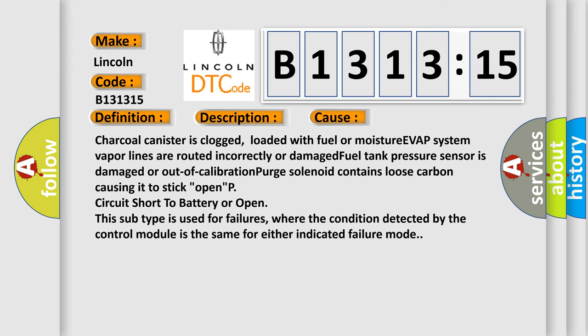This diagnostic error occurs most often in these cases: Charcoal canister is clogged, loaded with fuel or moisture; EVAP system vapor lines are routed incorrectly or damaged; fuel tank pressure sensor is damaged or out of calibration; purge solenoid contains loose carbon causing it to stick open; P circuit short to battery or open. This subtype is used for failures where the condition detected by the control module is the same for either indicated failure mode.